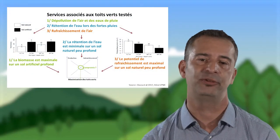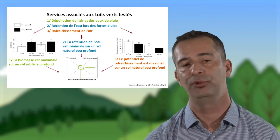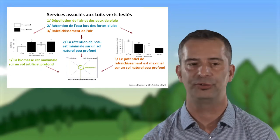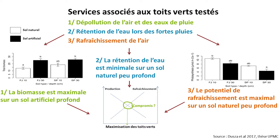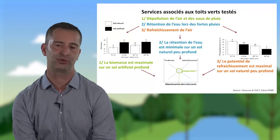Le premier exemple de résultat porte sur des services de régulation classiques : la dépollution de l'air et des eaux, la rétention de l'eau lors des fortes pluies, et le rafraîchissement de l'air. Sur les figures, en blanc le sol naturel, en noir le sol artificiel, à différentes profondeurs. On s'aperçoit que les services réagissent différemment selon les configurations. À gauche, la biomasse des plantes est maximale sur un sol artificiel profond, ce qui est très bien pour le long terme de la toiture végétalisée. Au milieu, la rétention de l'eau est minimale sur un sol naturel peu profond, mais à droite, à l'inverse, le potentiel de rafraîchissement est maximal sur un sol naturel peu profond.